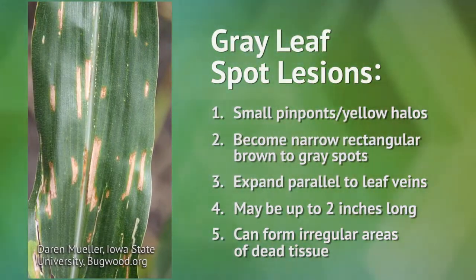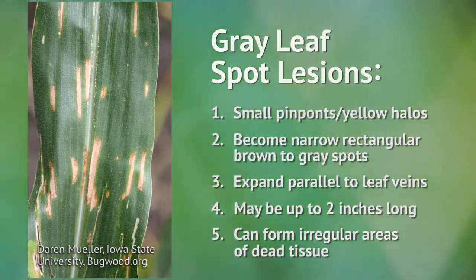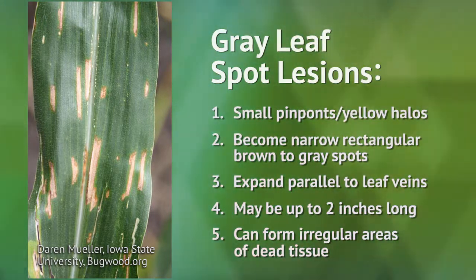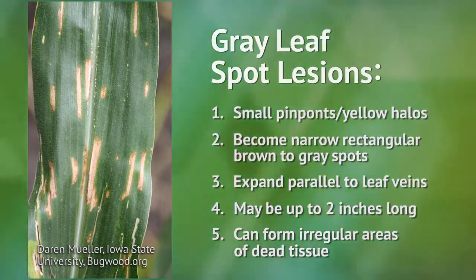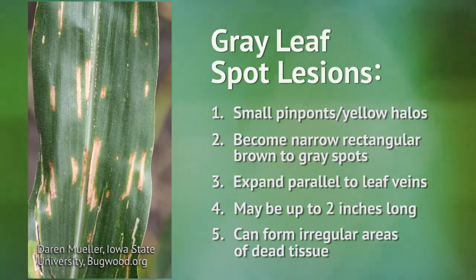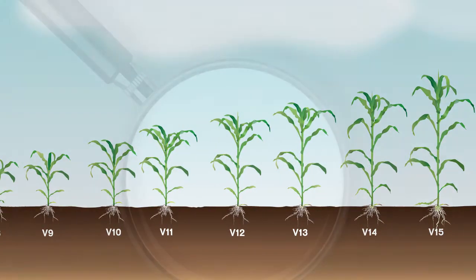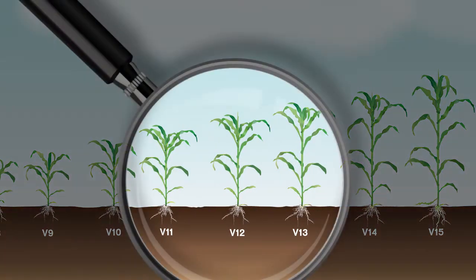Gray leaf spot lesions appear as small pinpoints surrounded by yellow halos. They elongate into narrow rectangular brown-to-gray spots; as they mature, they expand parallel to leaf veins and may be up to two inches in length, and can form large irregular areas of dead tissue. Symptoms will usually occur two to four weeks prior to pollination under favorable environmental conditions.